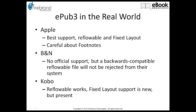Barnes & Noble doesn't have any official support for EPUB 3, but if you build a backwards-compatible reflowable EPUB 3 file that is backwards-compatible to EPUB 2, it won't be rejected from their system. So if you're doing a single-file workflow, you can at least give the file to Barnes & Noble. Kobo has some level of support for reflowable EPUB 3 files. Fixed-layout support is very new — if you want to put a fixed-layout EPUB 3 file into their system, you really need to talk to their technical support people directly because it's so new they aren't just accepting them outright.